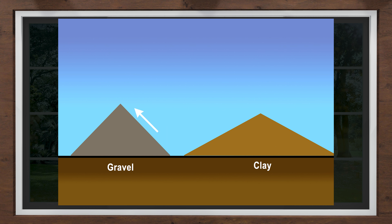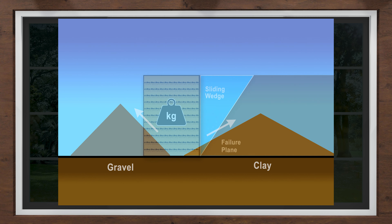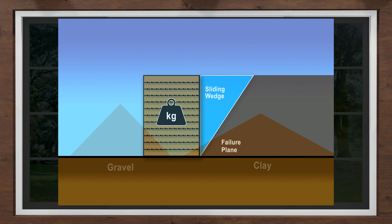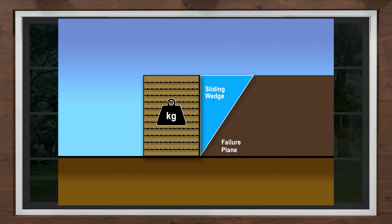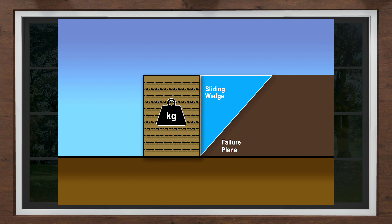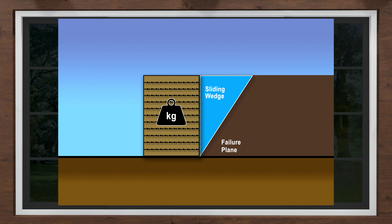If you have rough, gravelly soil, you can pile it into a steeper cone than if you have soft, finely grained soil. Clay soil's friction angles are less than stronger soils such as sands and gravels. For example, clay soil increases the area of the sliding wedge when the failure plane angle is reduced. Sandy soil decreases the area of the sliding wedge when the failure plane angle is increased.